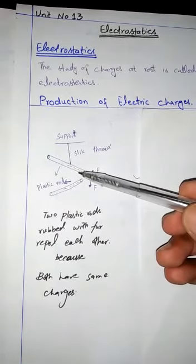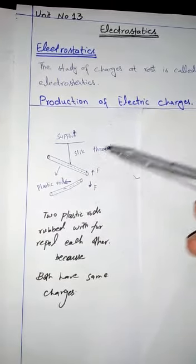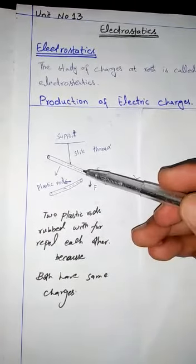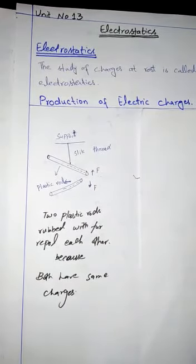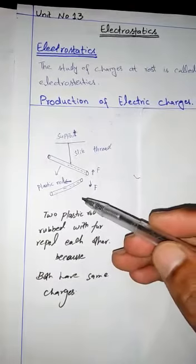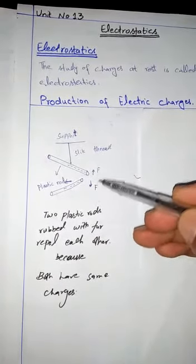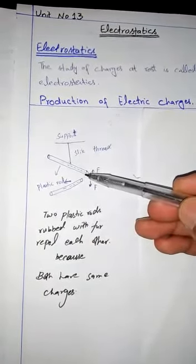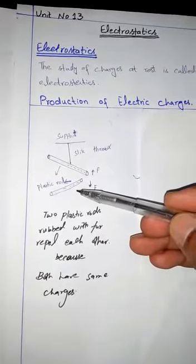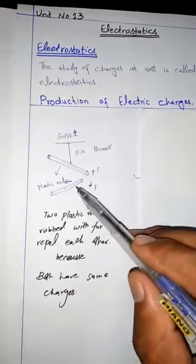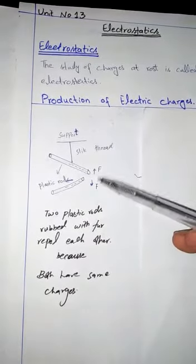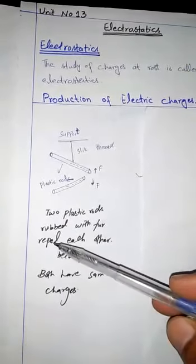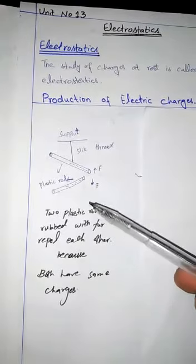When we rub the plastic rod with fur, negative charges appear due to rubbing. The charges that appear are negative charges. Two charges repel each other because both have the same charges.